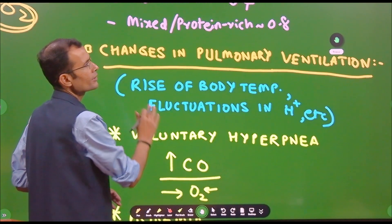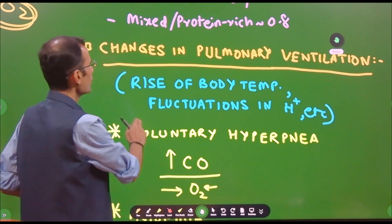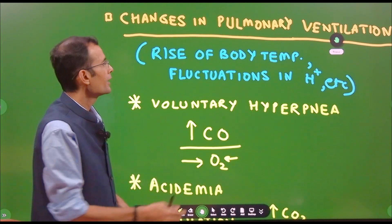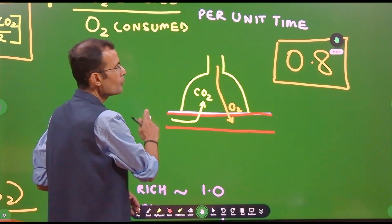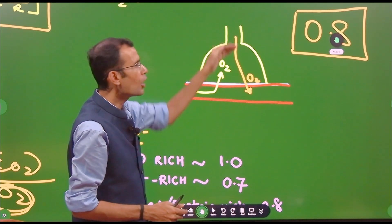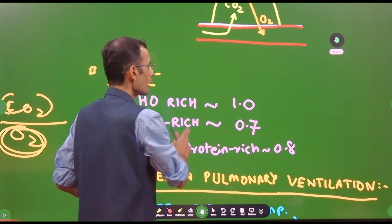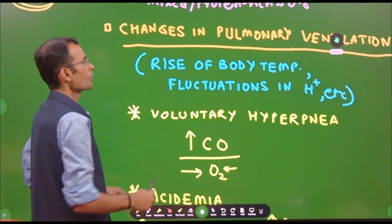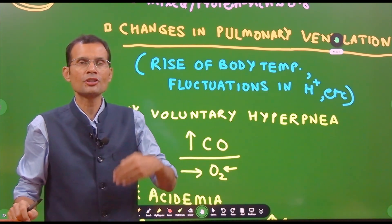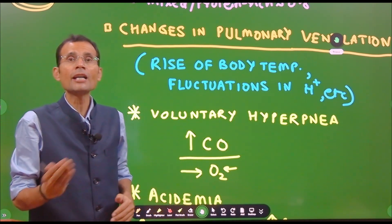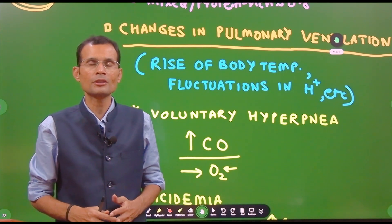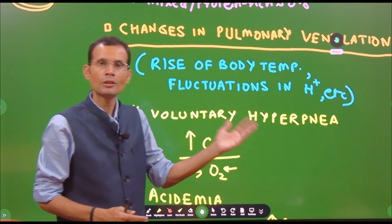Mixed diet or protein-rich diet keeps the ratio at 0.8. Pulmonary ventilation is obviously another important factor because it determines how much CO2 is expelled out and how much oxygen is taken in. Conditions like a rise in body temperature can increase ventilation, or fluctuations in H+ levels — if H+ increases, it stimulates ventilation via peripheral chemoreceptor stimulation and will alter the respiratory quotient.